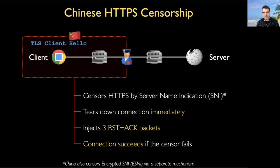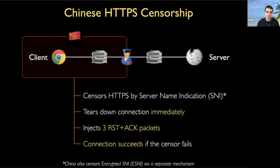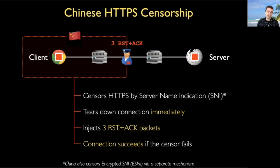If the client generates a TLS client hello to some forbidden resource — let's say wikipedia.org — this will pass through the SNI censor. This will perform deep packet inspection, or DPI, and the packet will pass through. The censor, however, immediately generates three reset ACK packets and sends those both to the client and the server to squash the connection.